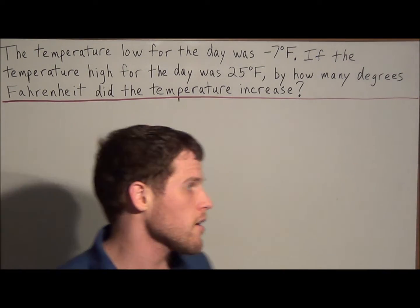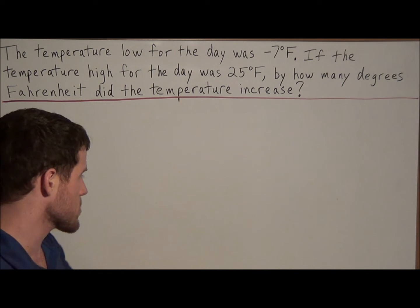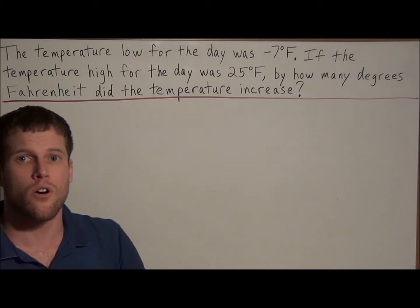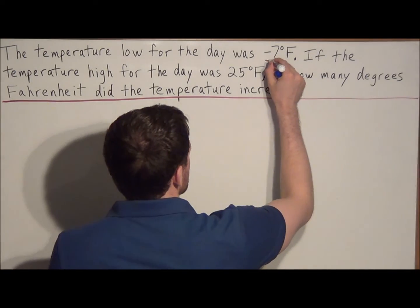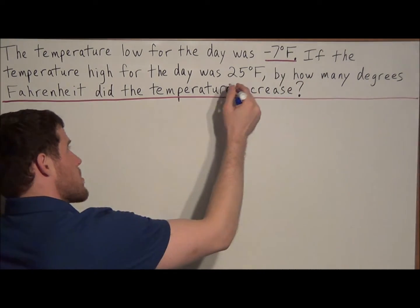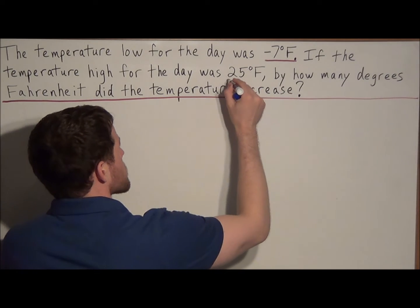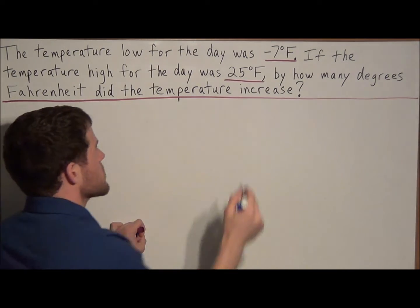So to find out how many degrees the temperature increased, what we want to look at is the low temperature and the high temperature. So we go back to the word problem and notice the important information here is the numbers. We have negative 7 degrees Fahrenheit and we have 25 degrees Fahrenheit.